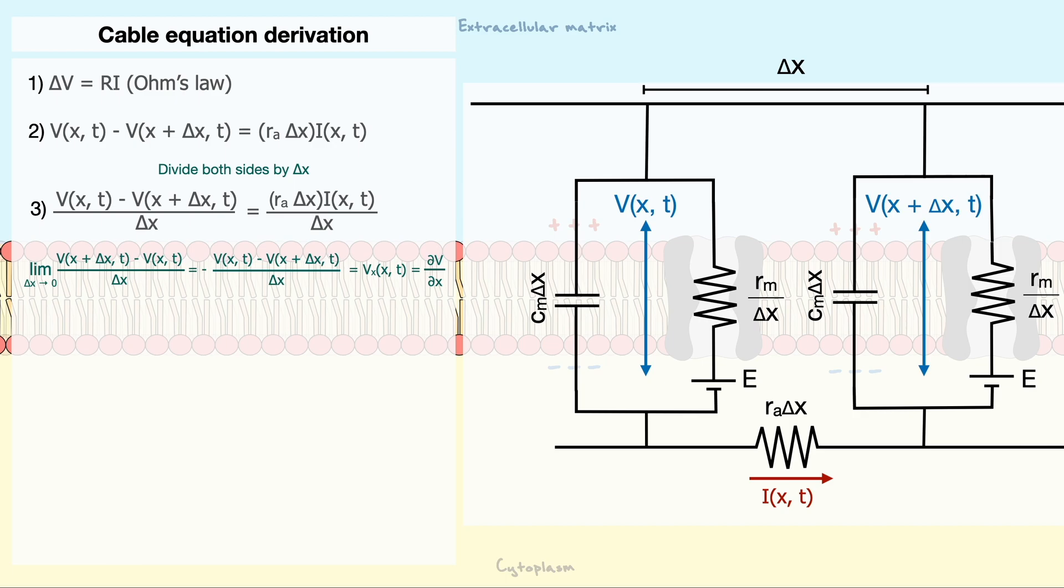if we take the limit as delta x goes to infinity, we almost have the definition of the partial derivative of the voltage with respect to x. If we add a negative sign, we get the same expression which we can replace in our equation. Thus, we arrive at the relation that the rate of change in voltage with respect to position is equal to the negative product of the axial resistance per unit length and the current going in between.